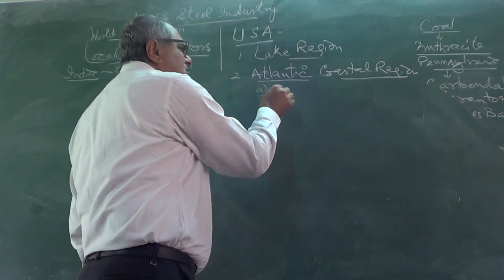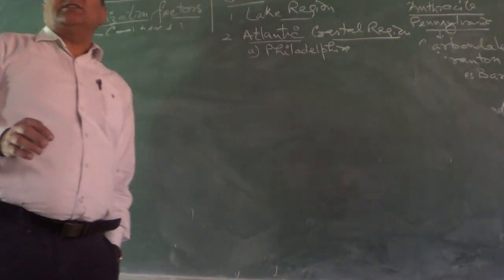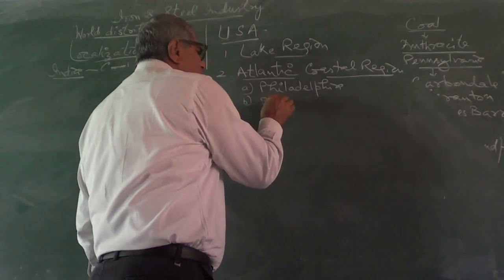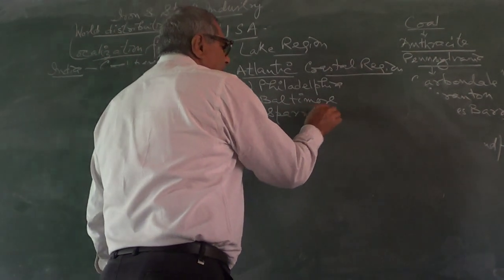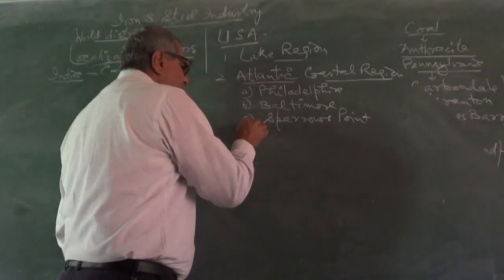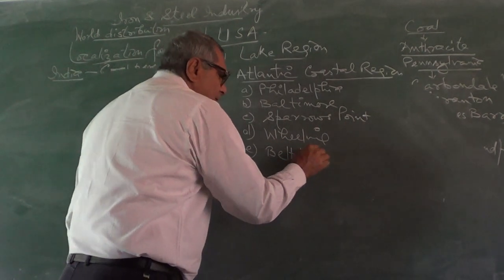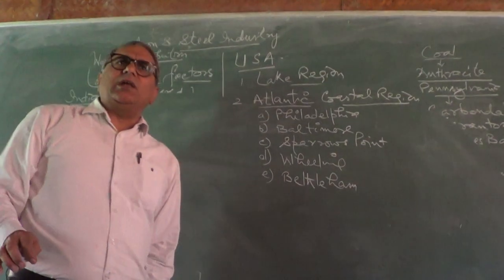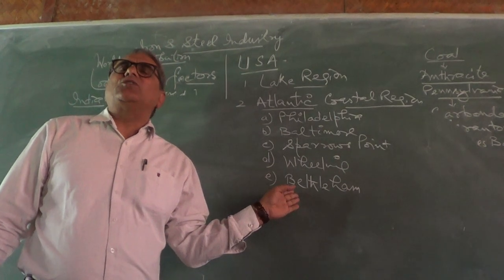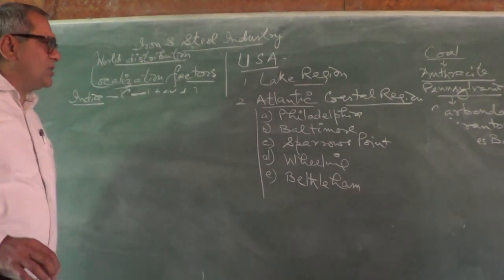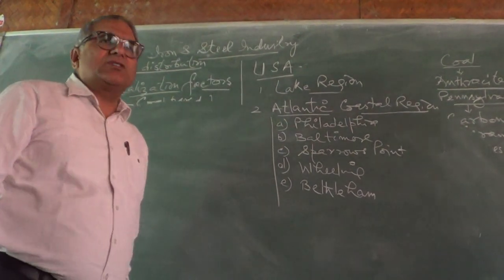The most important industrial towns in the Atlantic Coastal region are Philadelphia, Baltimore, Sparrow's Point, Wheeling, and Bethlehem. Bethlehem is still one of the largest steel manufacturing plants in the USA. These towns are located close to Washington and New York, the two big industrial centers.